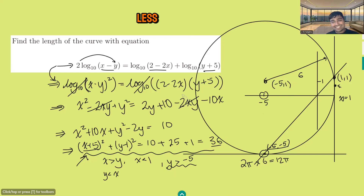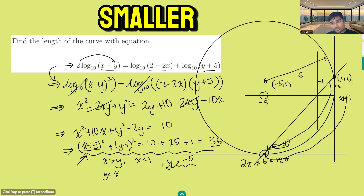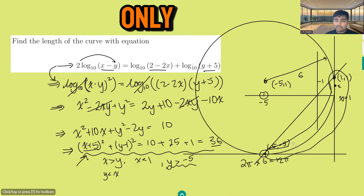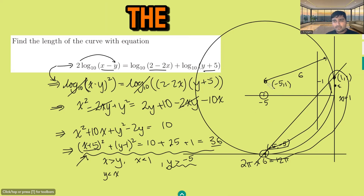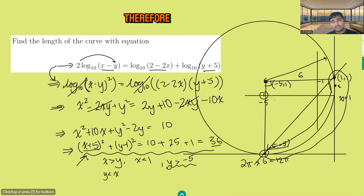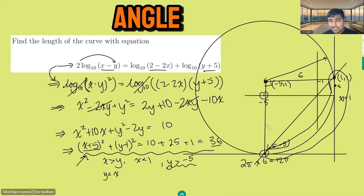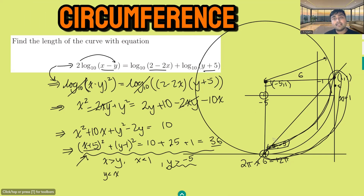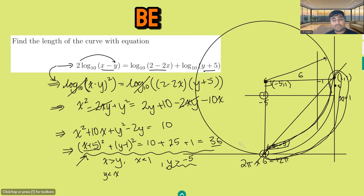We want y to be less than x, which corresponds to the smaller arc of the circle below the line y equals x. Now, from the center (minus 5, 1) to the point (1, 1) is a perfectly horizontal line, and from the center (minus 5, 1) to (minus 5, minus 5) is a perfectly vertical line. Therefore the angle between these two radii is a right angle, meaning this arc is precisely one quarter of the whole circumference. The full circumference is 12π, so a quarter of that is 3π. The length of this curve is 3π.